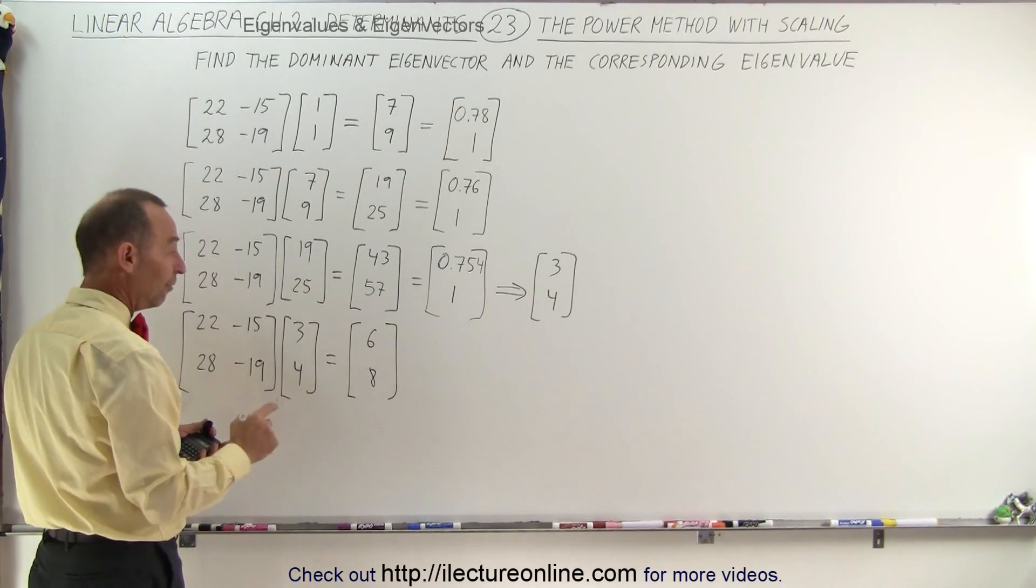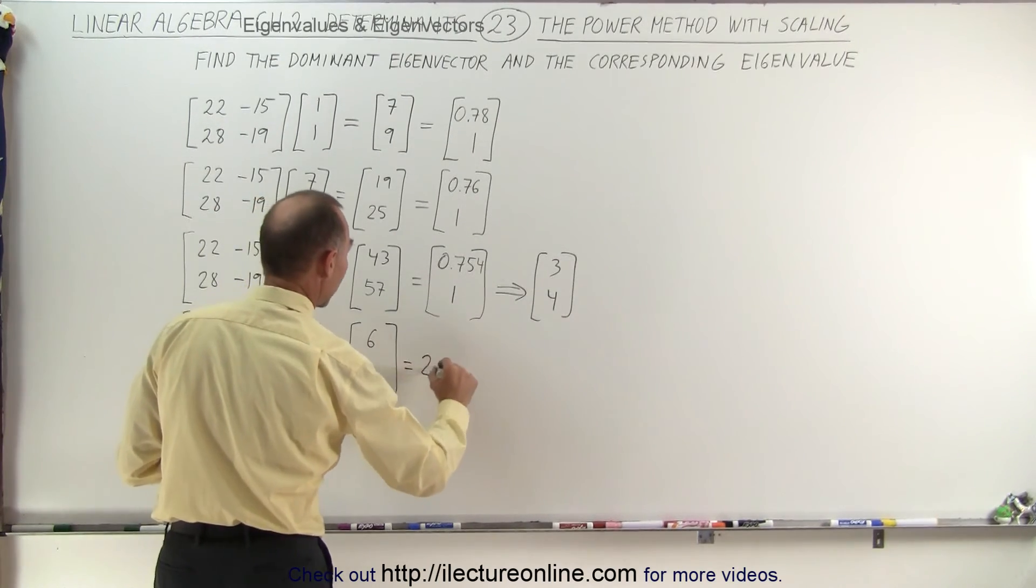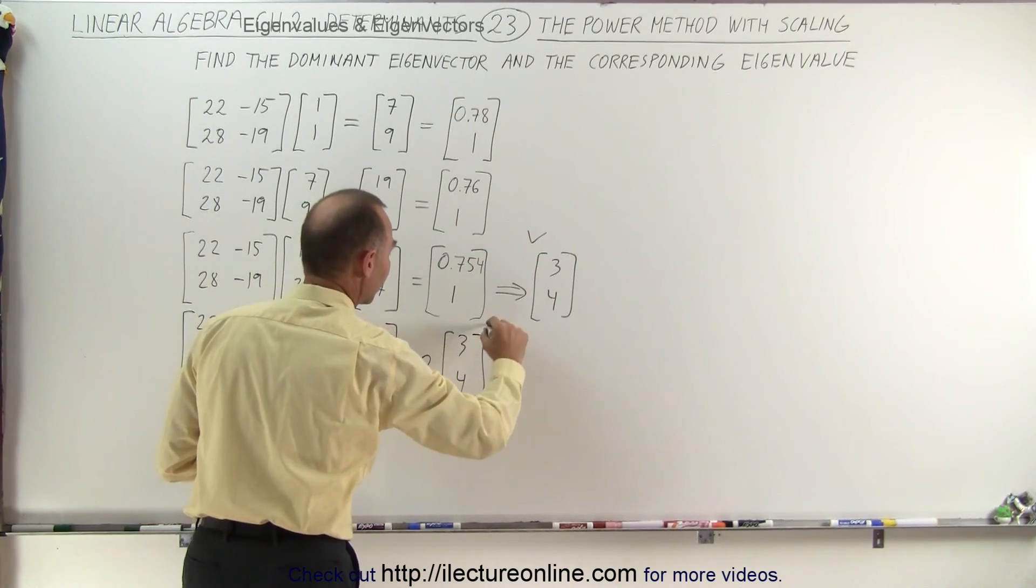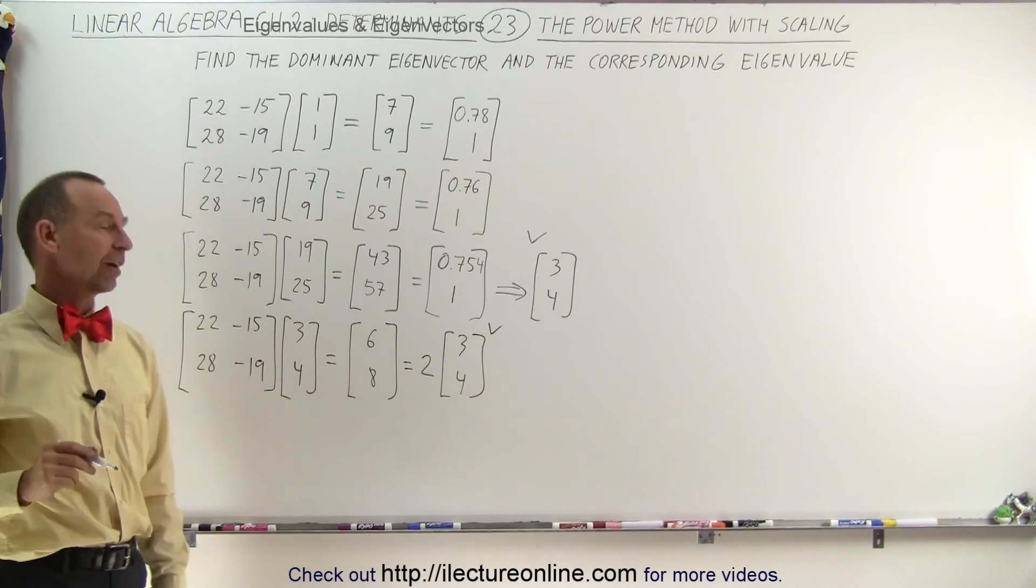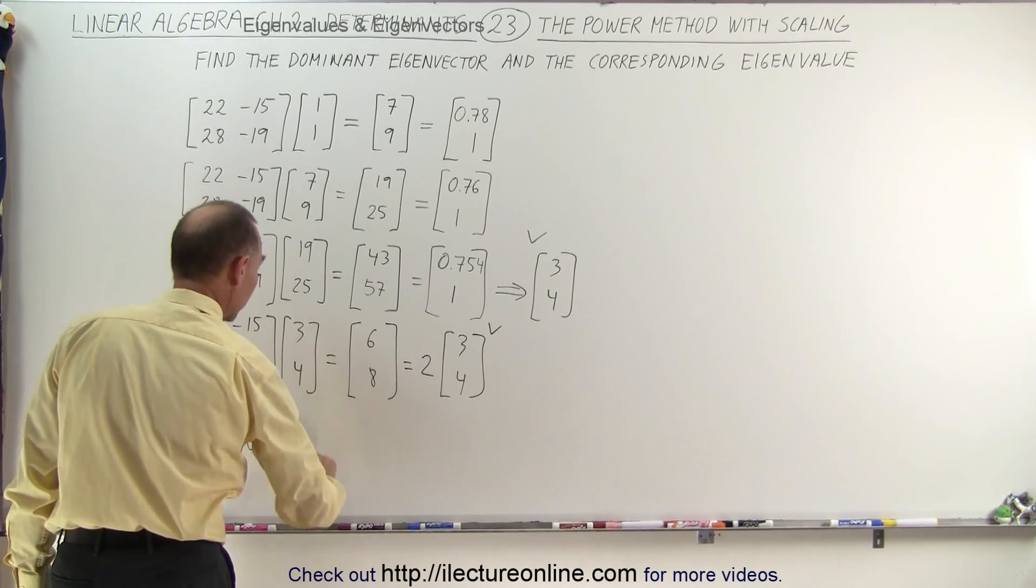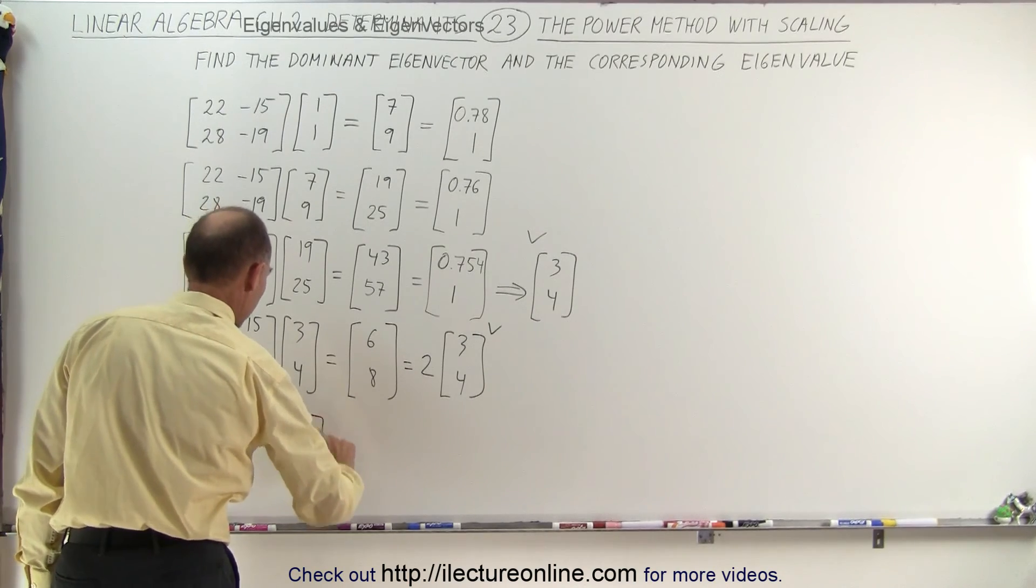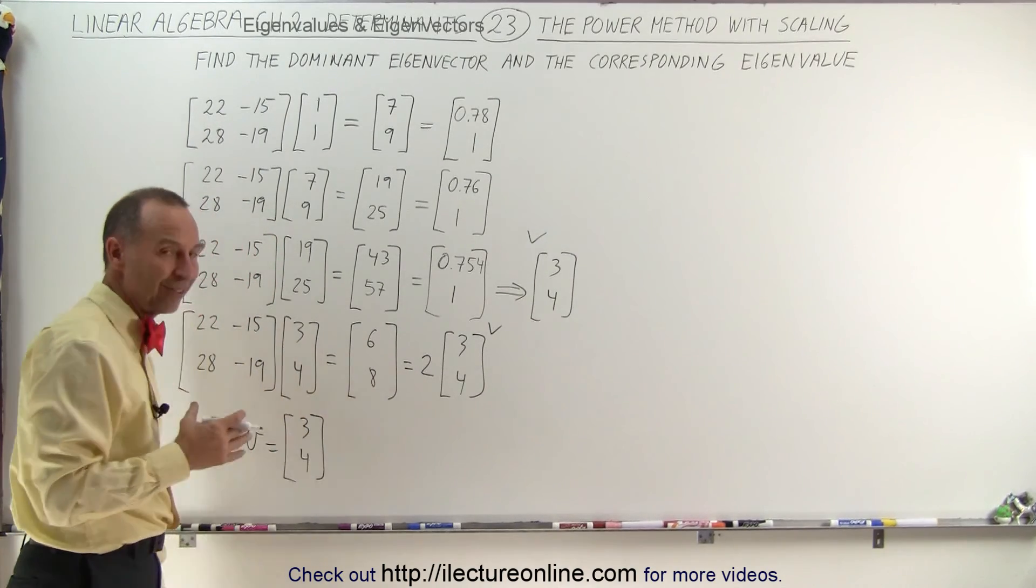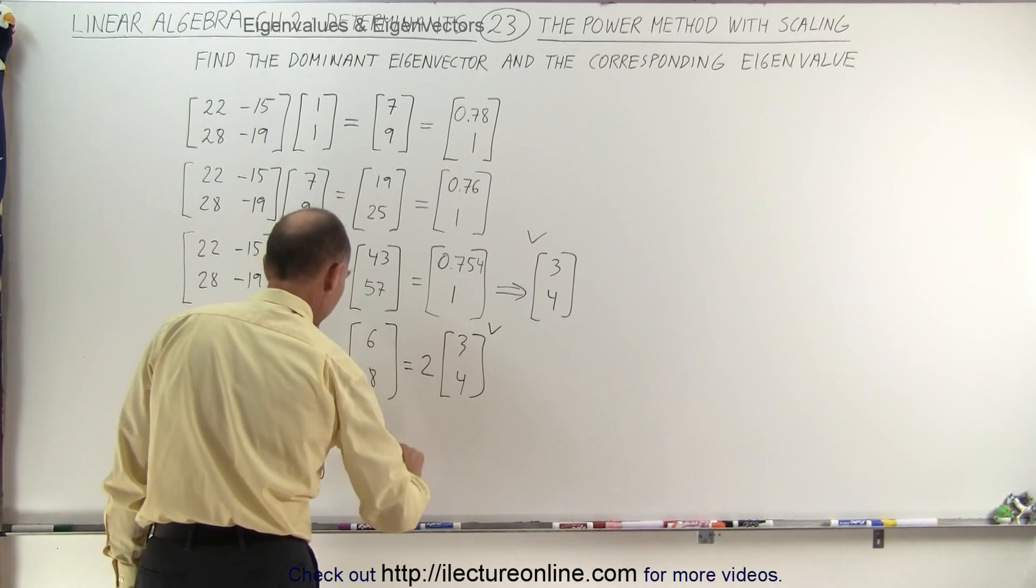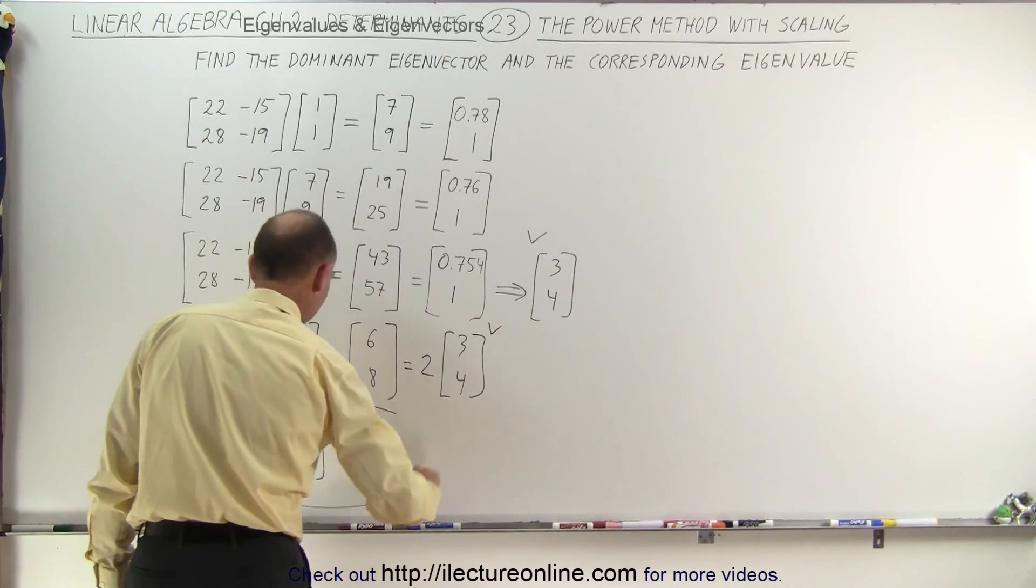And sure enough, this is equal to 2 times 3 and 4. Which seems to say that yes, we have found our eigenvector. Our eigenvector V is equal to 3 and 4. And because that would be considered the dominant eigenvector and the corresponding eigenvalue is equal to 2. And that's how that's done.